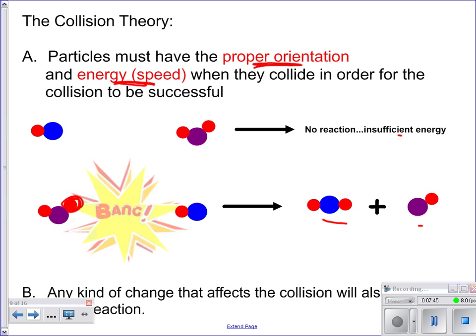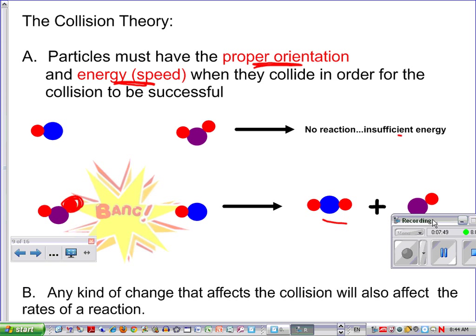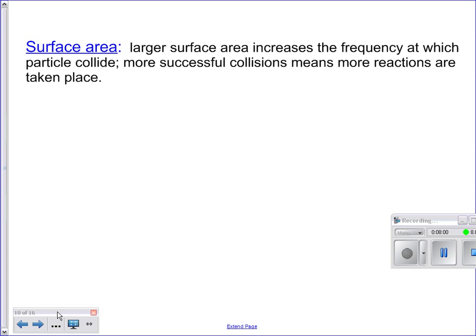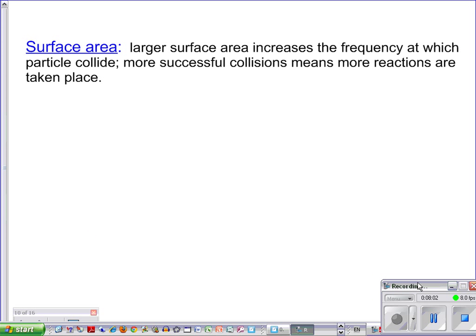So any kind of change, this is what we're going to look at in the next few things here. Any kind of change that affects these collisions, either the orientation or the energy involved in these collisions, also affects the rate of the reaction. And our first one that we're getting to is surface area.